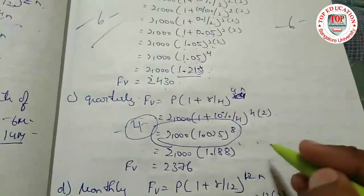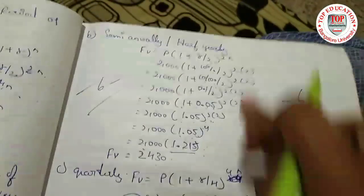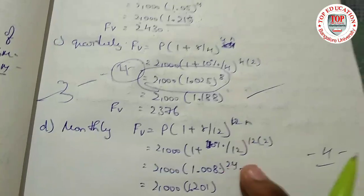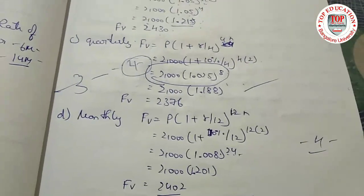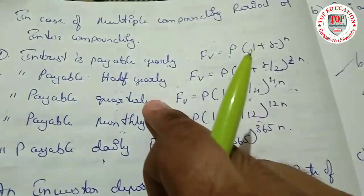For monthly: 12 into 2 is 24, so we multiply 1.00833 twenty-four times and get the answer. For daily with 365 days, it's a big calculation. They will not likely ask you daily — only yearly, half-yearly, quarterly, and monthly are the four methods you need to know.